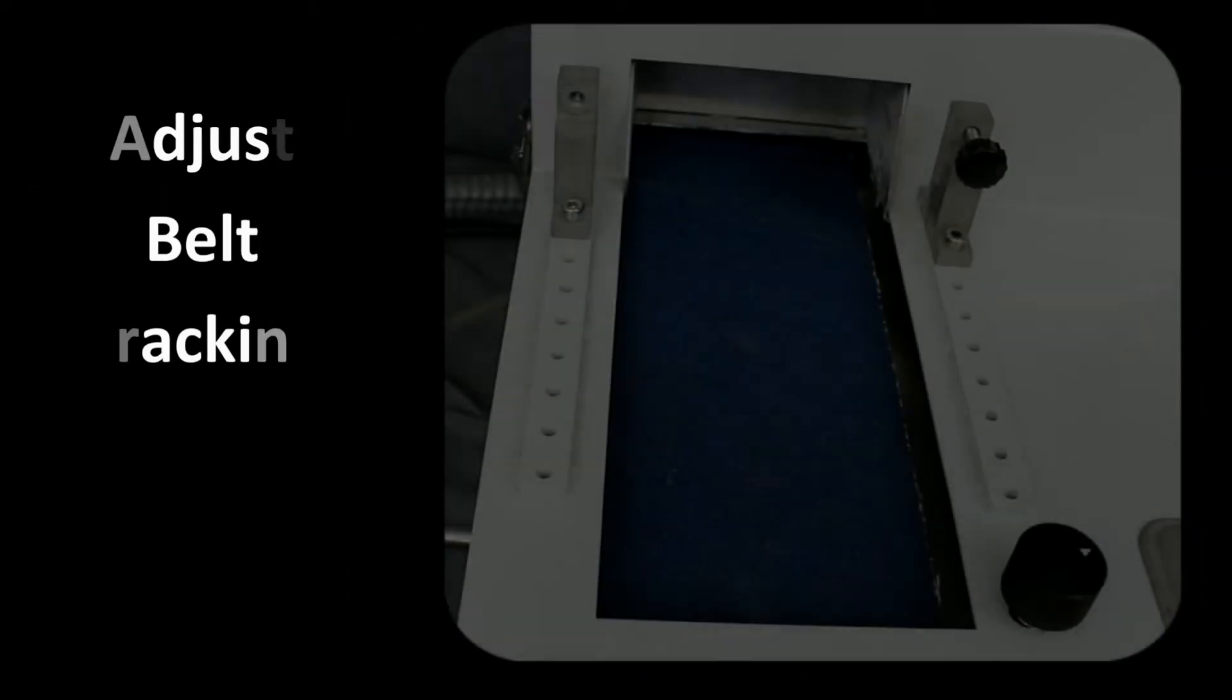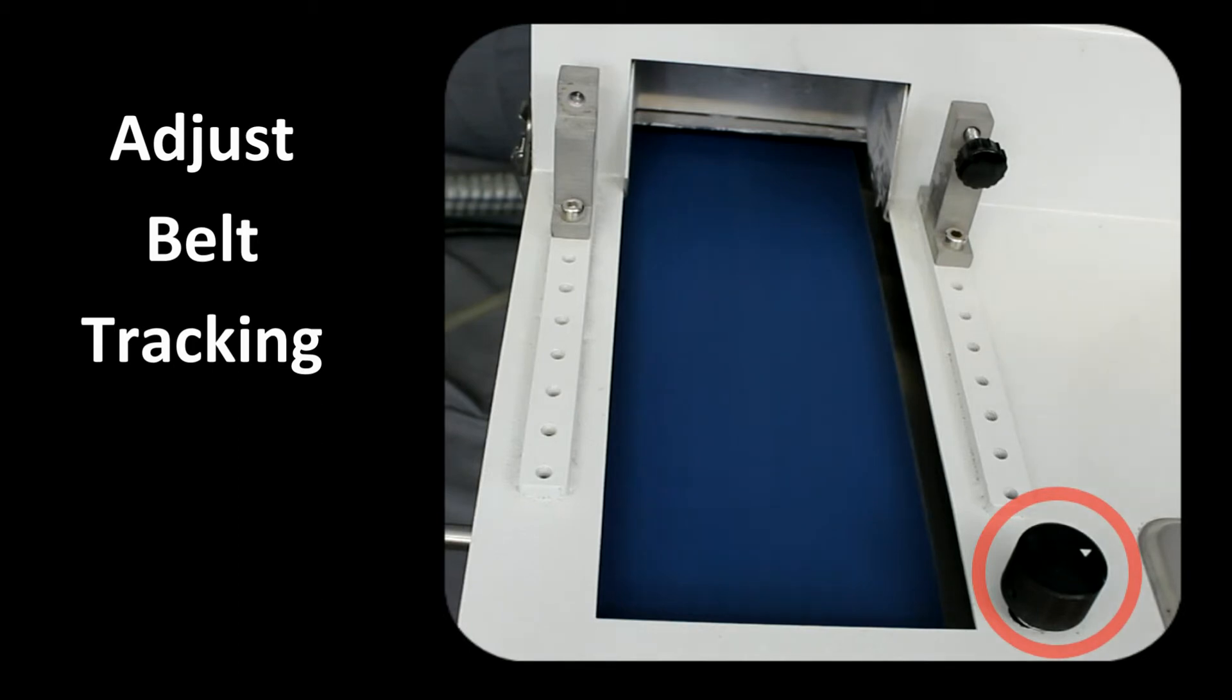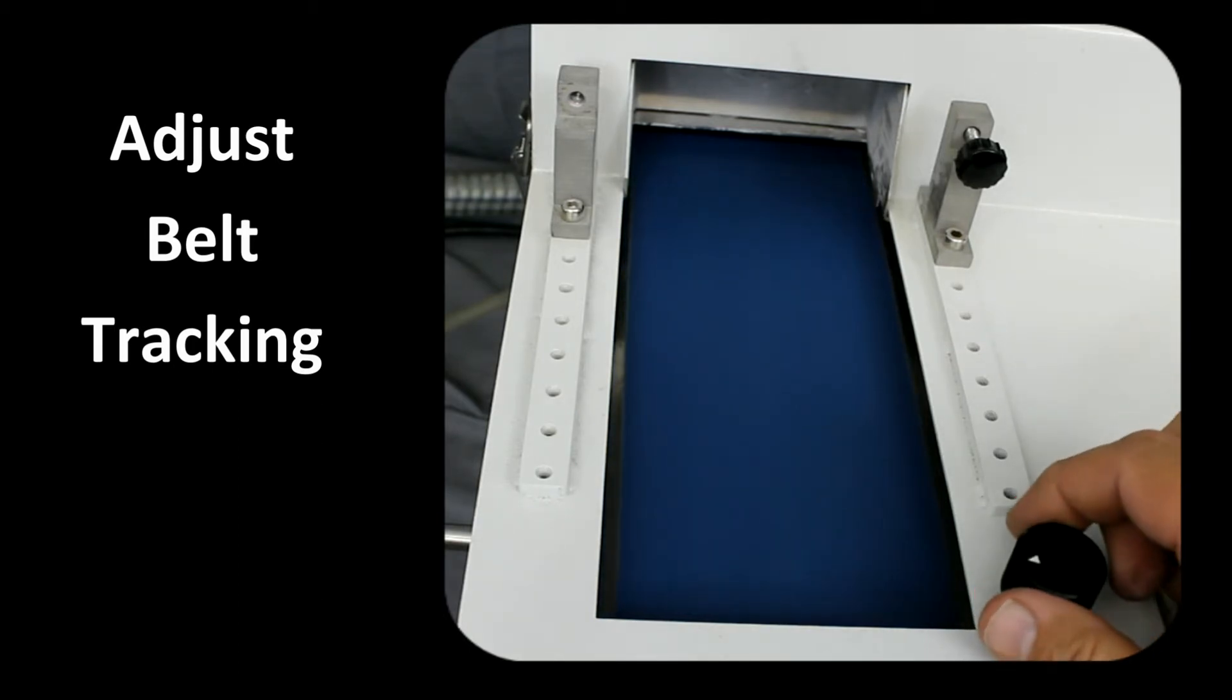The belt tracking can be adjusted with a knob located on the front right by the belt so that it tracks in the correct position. Slowly adjust the knob so that the belt tracks in the middle of the wear plate.